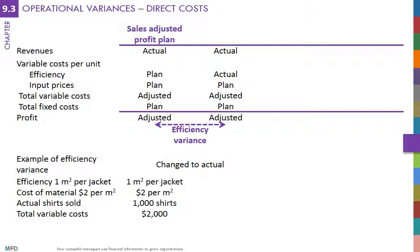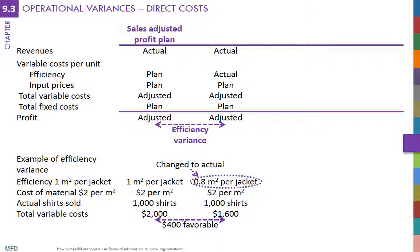If the company ends up using only 0.8 square meters, it has been more efficient because it used less fabric than planned — 0.2 square meters less per shirt. This difference translates into an additional profit of 0.4 euros per unit: 0.2 square meters of fabrics at 2 euros per square meter. The efficiency variance in this case would be favorable. Multiplying this amount by the number of shirts gives the total efficiency variance for fabrics.